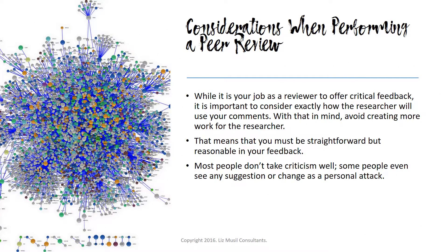Considerations when performing a peer review. While it is your job as a reviewer to offer critical feedback, it is important to consider exactly how the researcher will use your comments. With that in mind, avoid creating more work for the researcher. You may see where areas of writing could be improved or where they could do more work, but you should consider whether your suggestions are feasible. What you are measuring is whether the work contributes more knowledge about the topic within the context of your class, journal, or project. You must be straightforward but reasonable in your feedback.